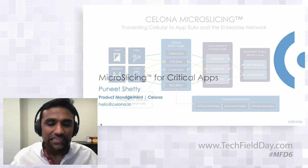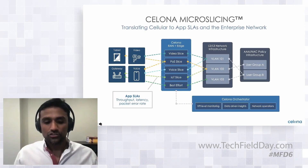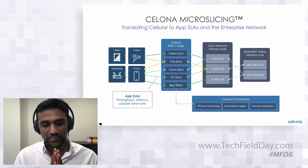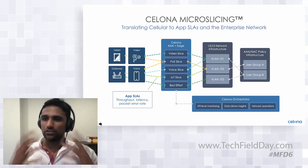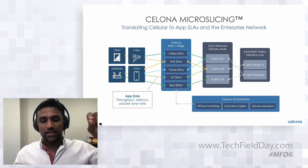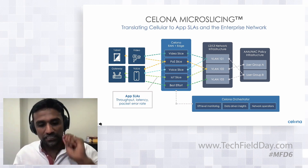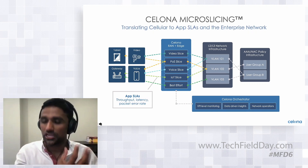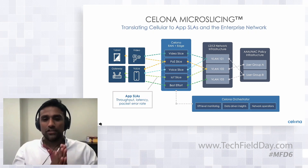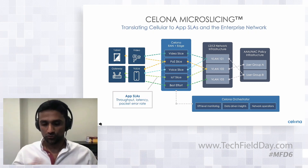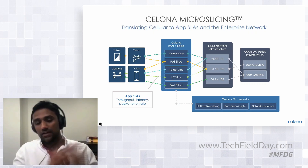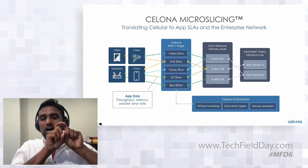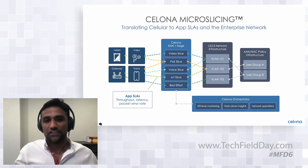This is where slicing and micro slicing comes into picture. Those familiar with the cellular world have probably heard of network slicing, which allows delivery of QoS guarantees to enterprises. What we have done is built on top of existing standards and made it granular to the point of devices and applications — because from an enterprise perspective, what they care about is their applications and the devices running those applications.